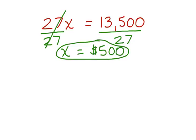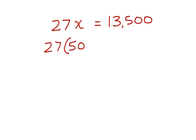We can also check our work. Let's take a look. First, write down the original equation. 27 students times x equals $13,500. According to when we solved the equation, we learned that each student received $500 equals $13,500.